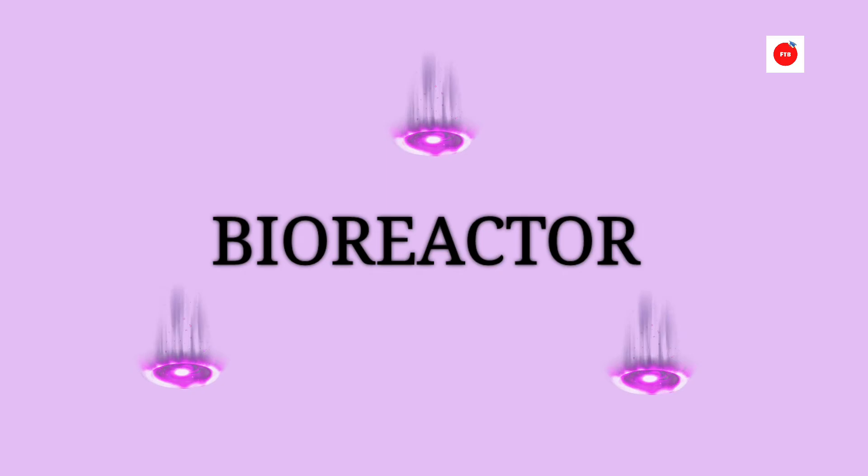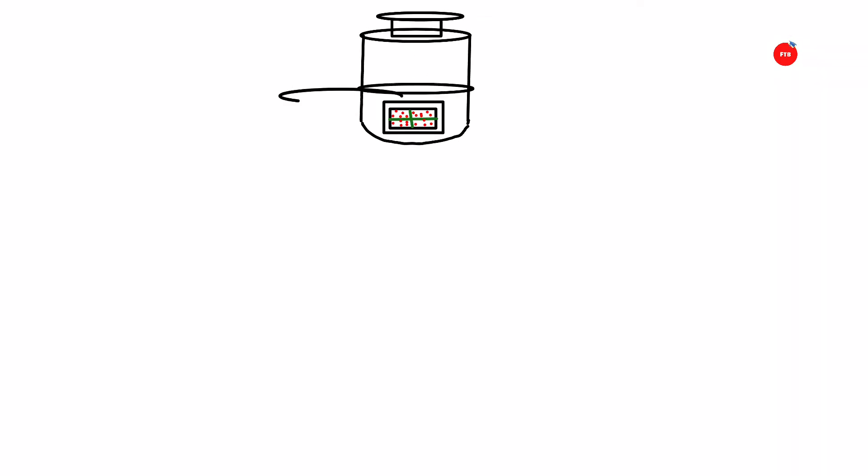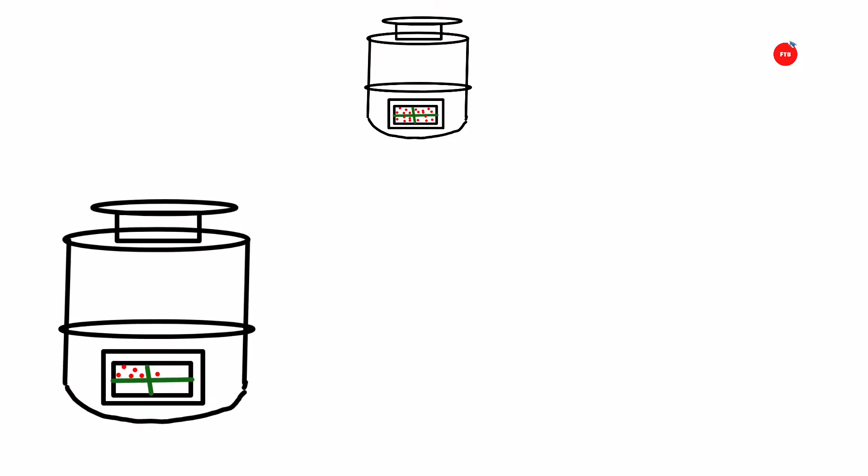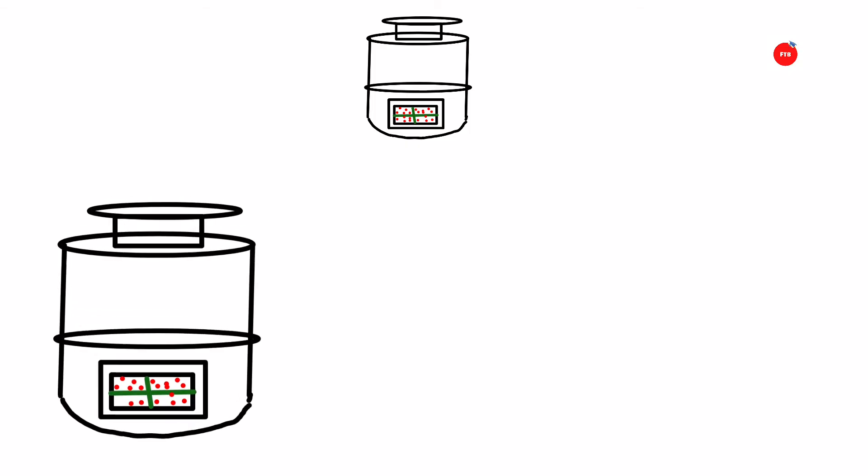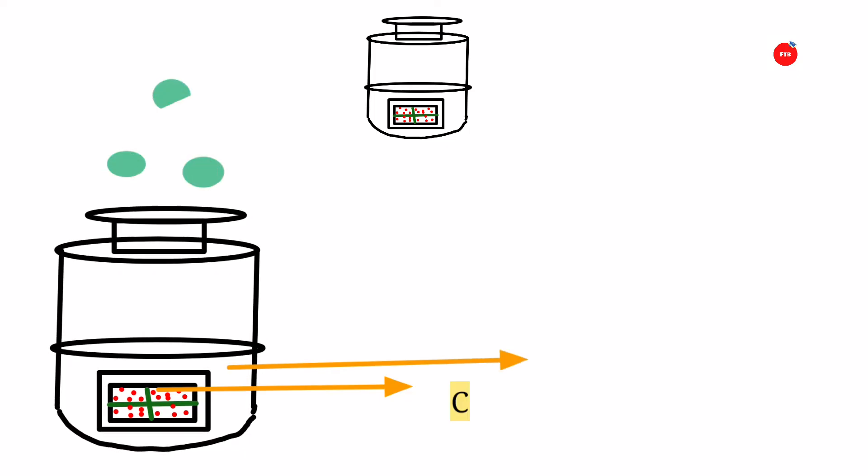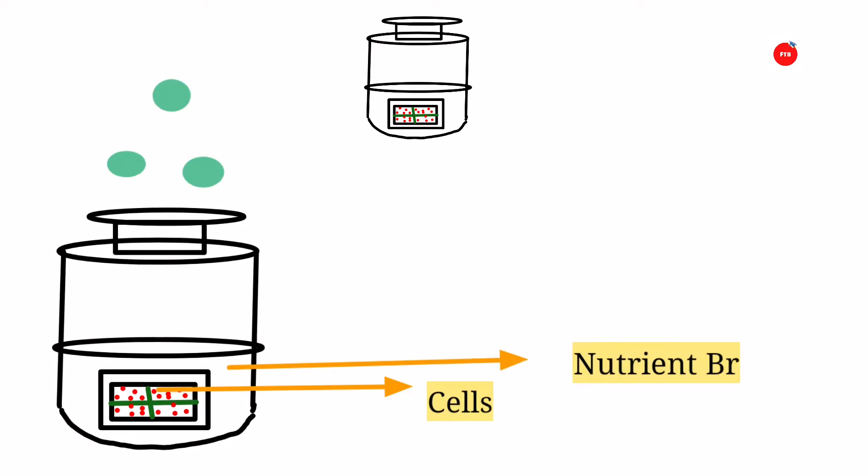Well foodies need not worry because this becomes possible in bioreactors. They allow cells to grow outside the body, i.e., in vitro, by providing suitable environmental conditions. Here such growth conditions are maintained which mimic the conditions found within the organism.